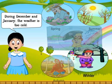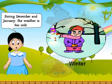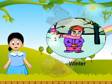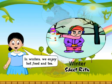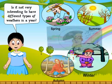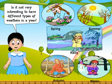During December and January, the weather is too cold. This season is called the Winter season or Sharda Ritu. In winters, we enjoy hot food and tea. Is it not very interesting to have different types of weather in a year?